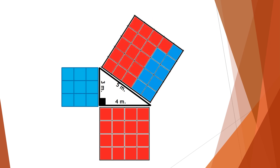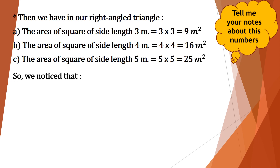Let's count the small squares on the side of length 3 meters. The square drawn on the side of length 4 meters contains 16 squares, and the square drawn on the side of length 5 meters contains 25 squares. The area of the square of side length 3 meters equals 3 × 3 = 9 m². The area of the square of side length 4 meters equals 4 × 4 = 16 m². The area of the square of side length 5 meters equals 5 × 5 = 25 m². We notice that A + B = C: A is 9 m², B is 16 m², and C is the sum 9 + 16 = 25 m².